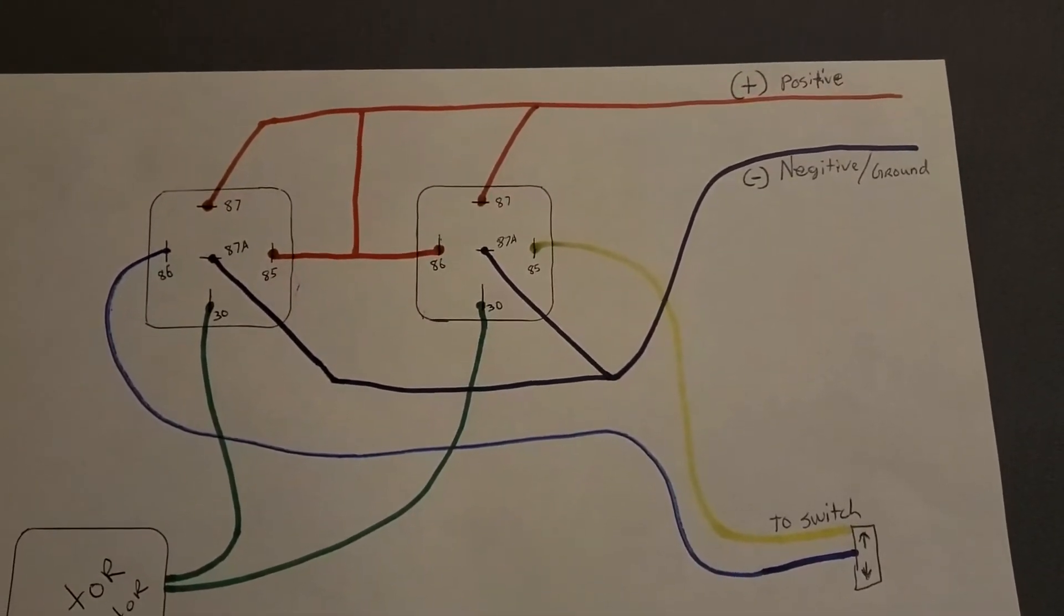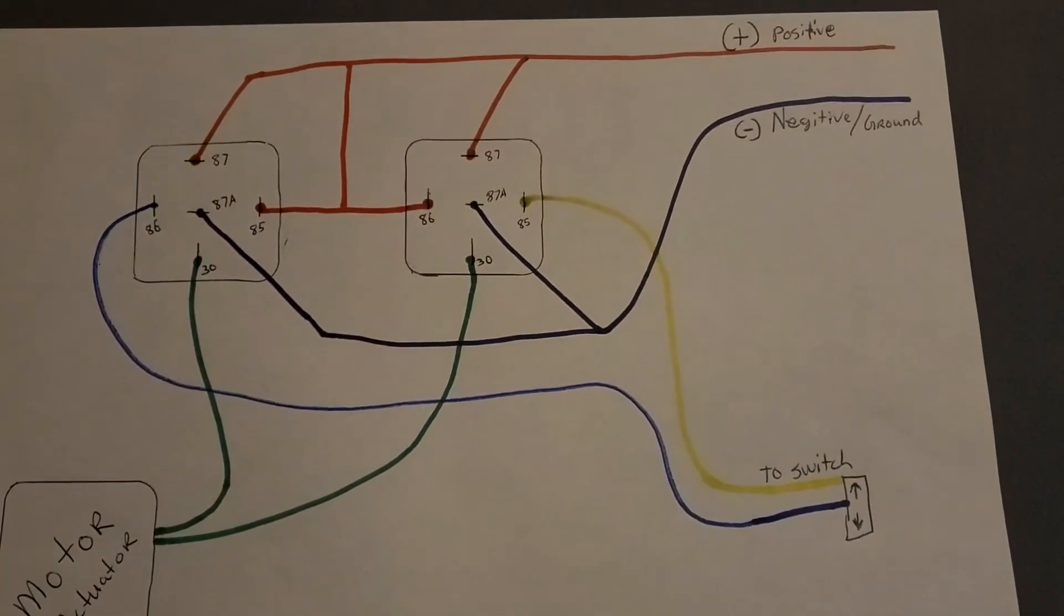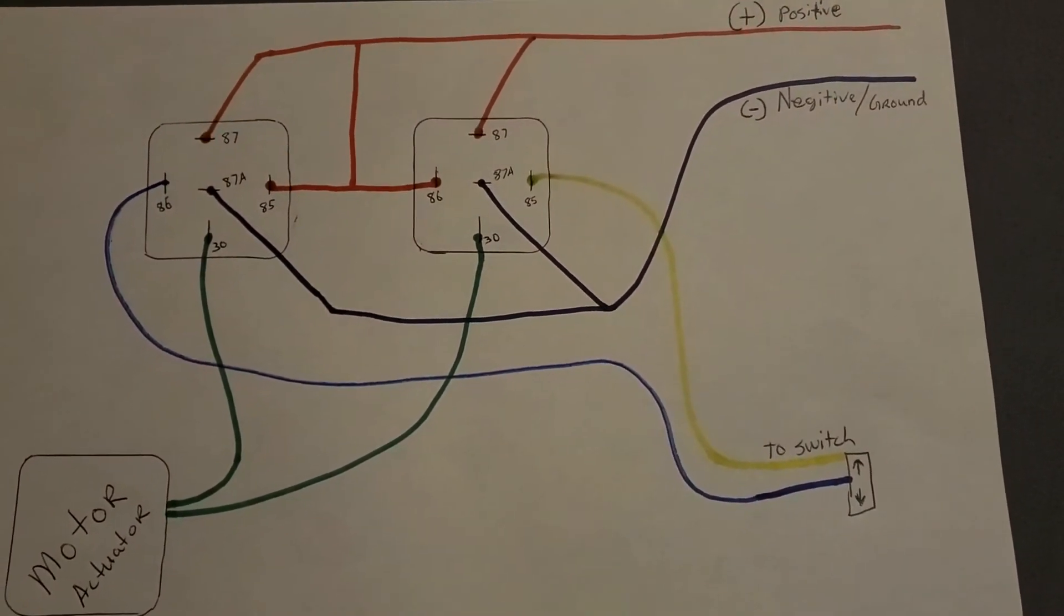Your dark wire, which looks black or maybe dark blue here, is your negative or ground.